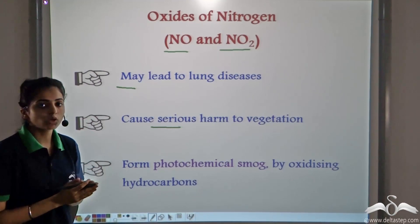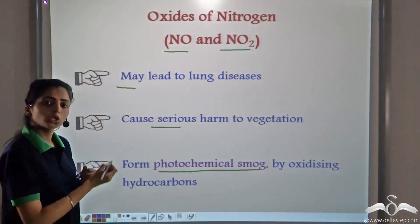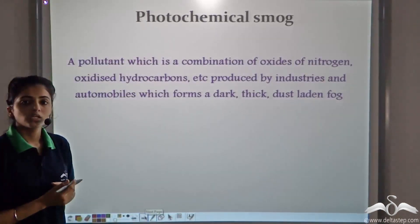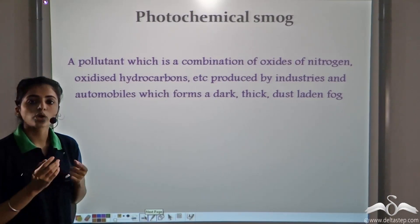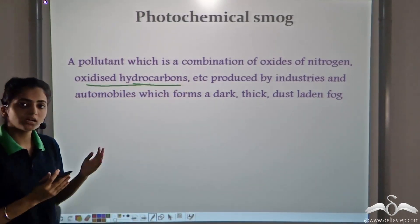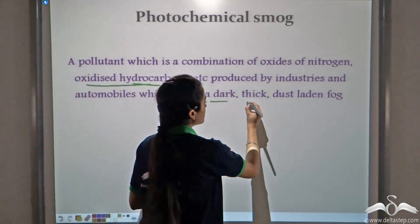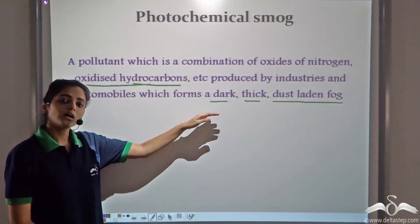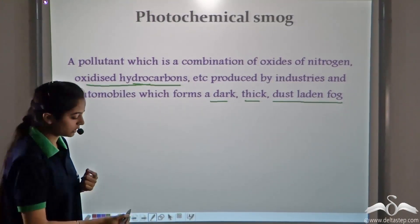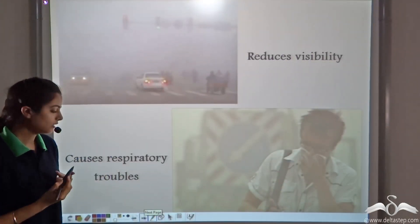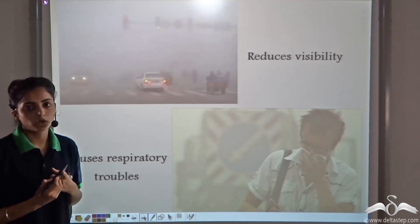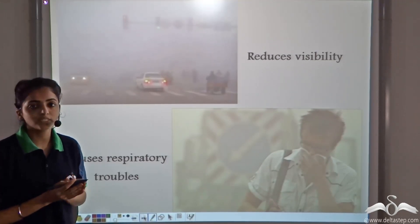One very serious effect of these oxides of nitrogen is photochemical smog. Photochemical smog is usually found in industrial areas. When the oxides of nitrogen and oxidized hydrocarbons combine in industrial areas or in the presence of automobiles, they form a dark thick dust-laden fog — and this is what we call photochemical smog. It is very harmful as it leads to reduced visibility and causes serious respiratory problems, nausea, dizziness, and so on.